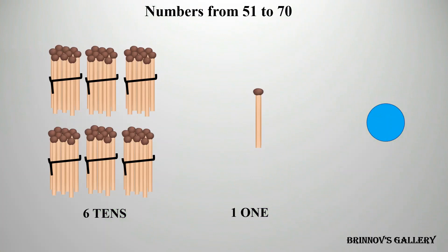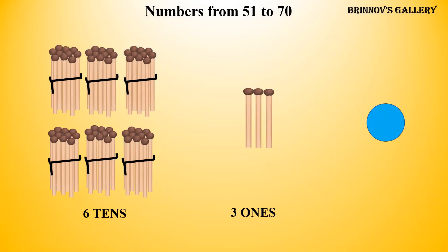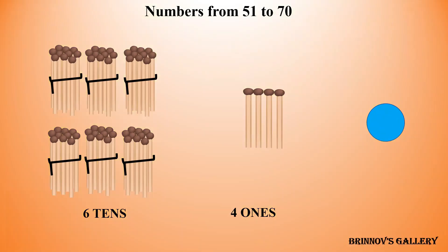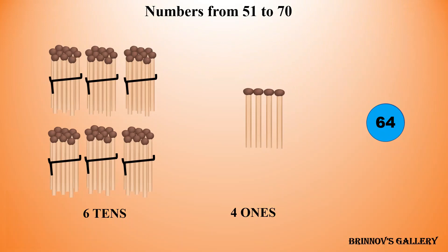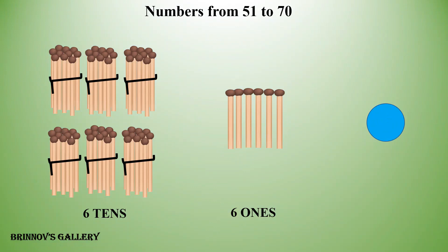6 tens, 1 one — 61. 6 tens, 2 ones — 62. 6 tens, 3 ones — 63. 6 tens, 4 ones — 64. 6 tens, 5 ones — 65. 6 tens, 6 ones — 66.